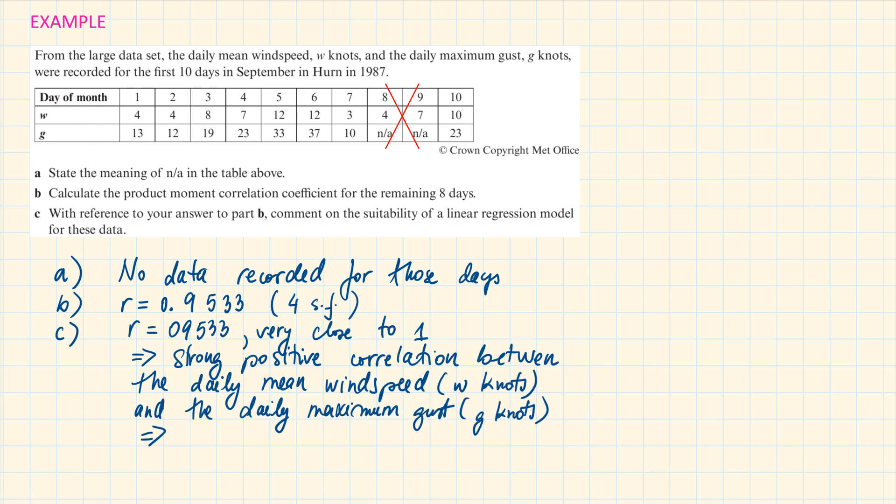Because we have a strong positive correlation, it means that a linear regression model is suitable. If we would plot this data on a scatter graph, all the points would be very close to the line of best fit.